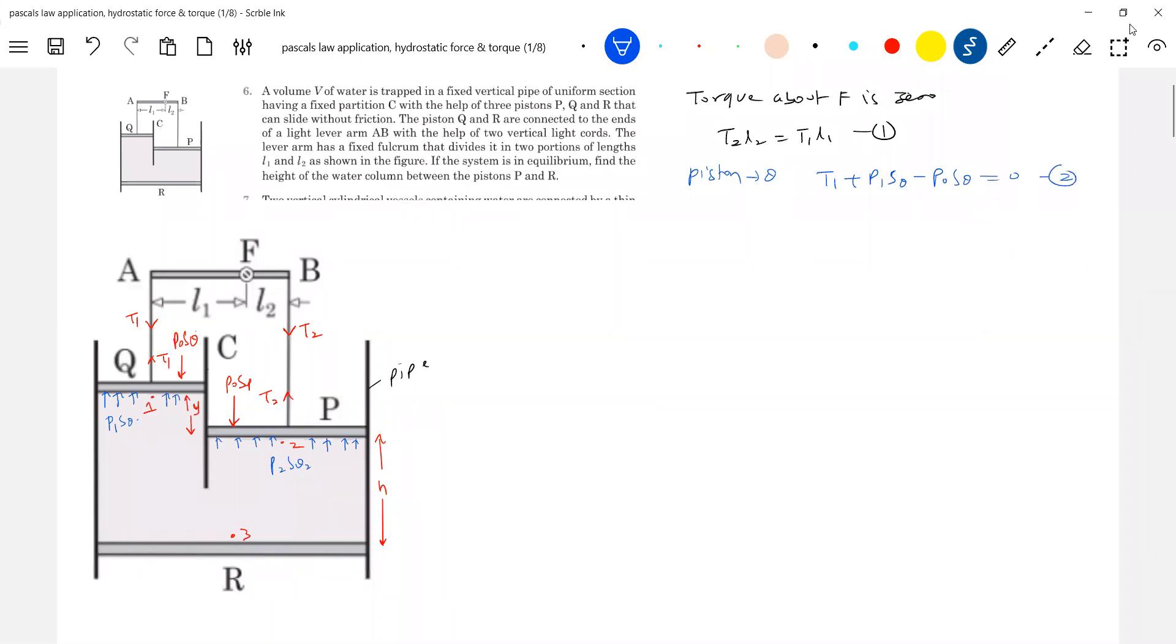Similarly on piston P: T2 + P2·Sp - P0·Sq = 0. Symbols, okay I'm just recording that I'm taking symbols. What is area of cross-section? Pressure into area will be the force here minus P0·Sq equal to zero. I think almost the problem is over if you are able to write this much here.